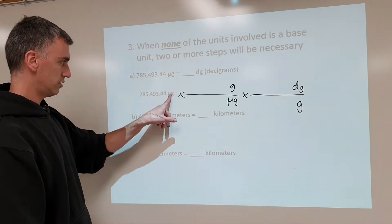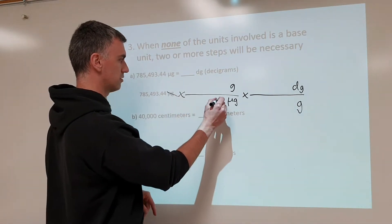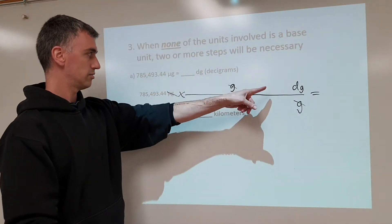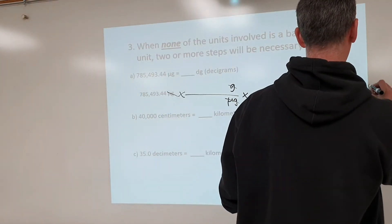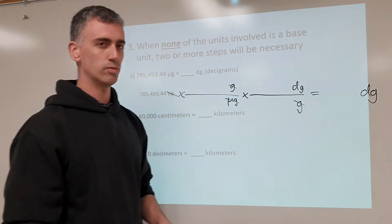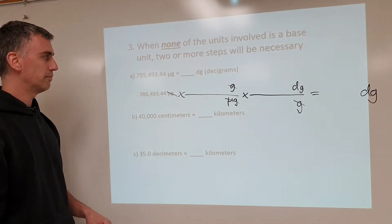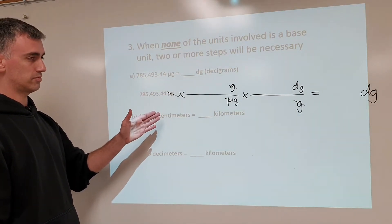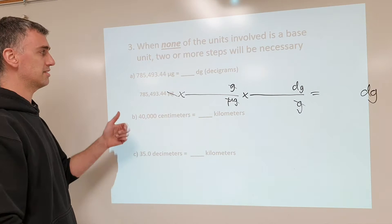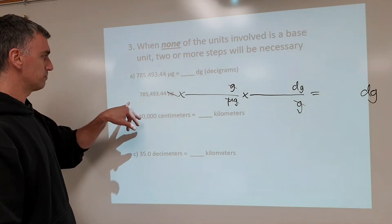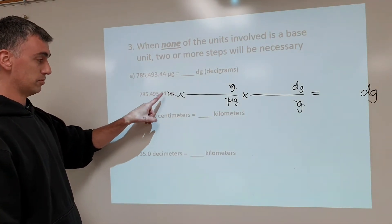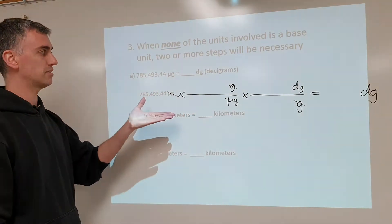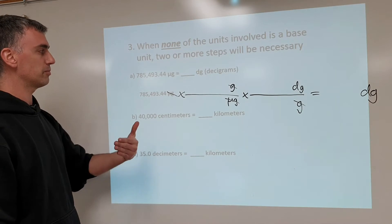So this cancels, this cancels, leaving this. That's step two — set up units. Notice: no numbers. Don't even think about putting numbers in here until your units are right. Now that we've done that, we can put in numbers.